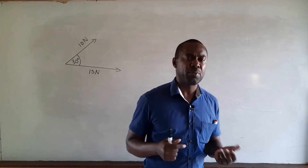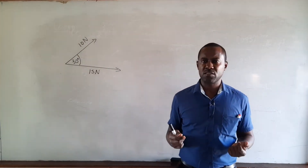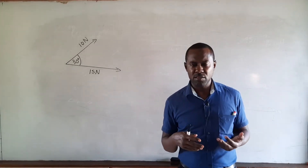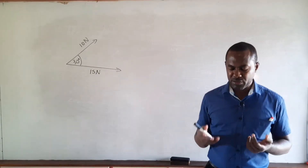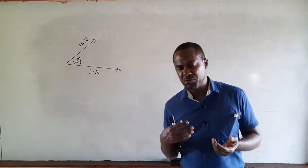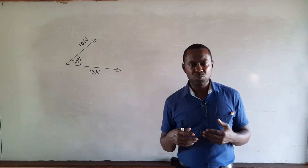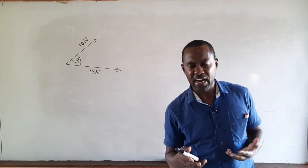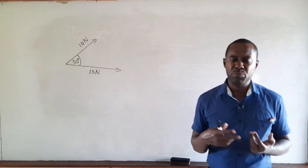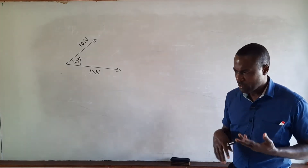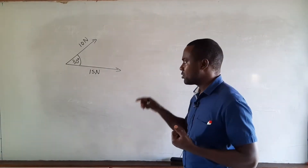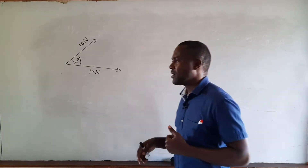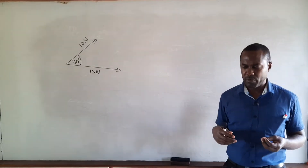So far we've looked at perpendicular forces and we've been able to use Pythagoras' theorem to find the resultant magnitude, and a trig ratio — commonly tan — to find the angle the resultant makes with the horizontal. In this particular case the two forces are acting at an angle but it is not a right angle, and therefore we cannot use Pythagoras' theorem.